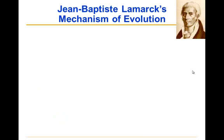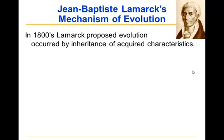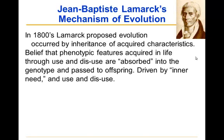We did have some evolutionary concepts that preceded Darwin. One was the idea of Jean-Baptiste Lamarck, who proposed that evolution occurred by inheritance of acquired characteristics. Acquired characteristics are features that were not present in an organism's genotype or phenotype but were acquired during its lifetime and then passed on to offspring.